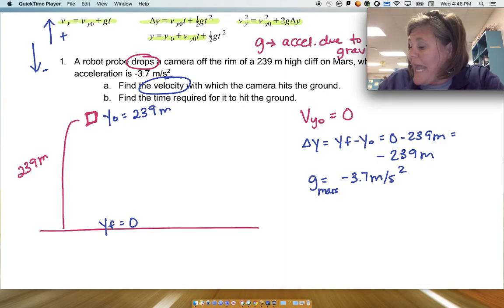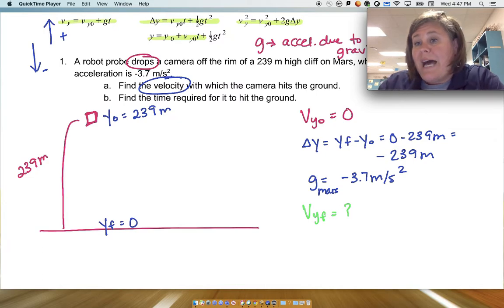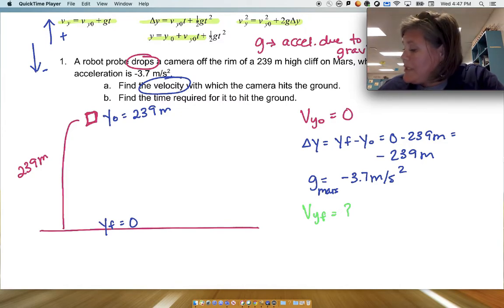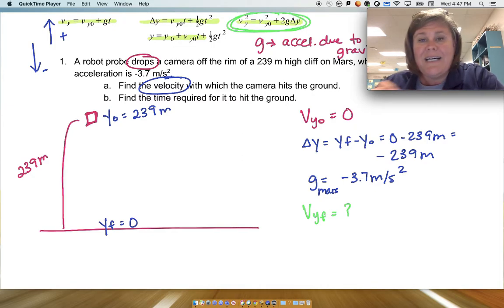And for part A, we want to know the velocity with which the camera hits the ground. So for part A, we want to know the final vertical velocity. And I have plenty of information. Notice I'm not given time, and I'm not looking for time.